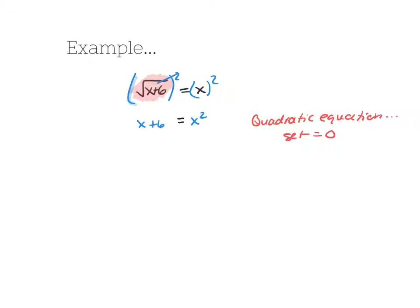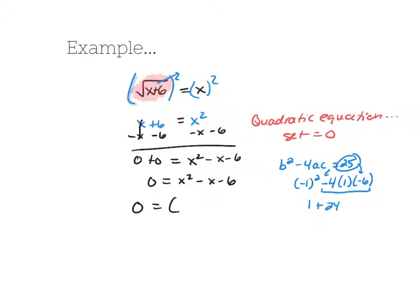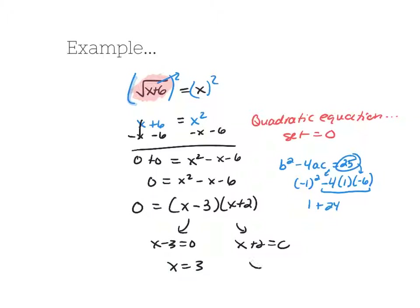With a quadratic equation, we want to get it equal to 0. So we subtract x and subtract 6 from both sides, giving us the standard form. We calculate the discriminant to find the best solving method: b is negative 1, so b squared is 1, minus 4 times a times c. The negative times negative gives a positive, and 4 times 6 is 24, so the discriminant is 25 — a perfect square — meaning we factor. We factor into (x minus 3)(x plus 2), and setting each factor equal to 0 gives x equals 3 and x equals negative 2.